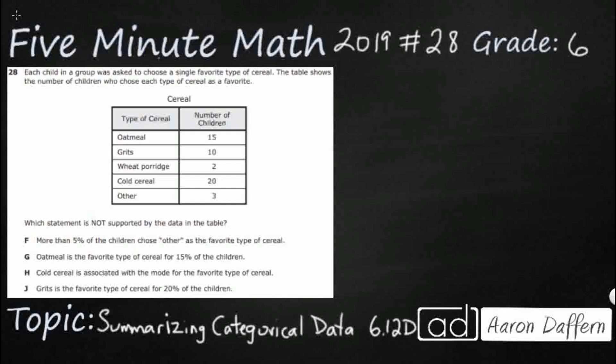If you have not done so already, please go ahead and take a moment to pause the video, work this problem out on your own, unpause it, and then we will look at our answers together. So we have a simple table here. Seems easy to begin with. We have children, and they're asked to name their favorite type of cereal. But look at our answer selections. We first need to find a statement that is not supported by the data in the table.